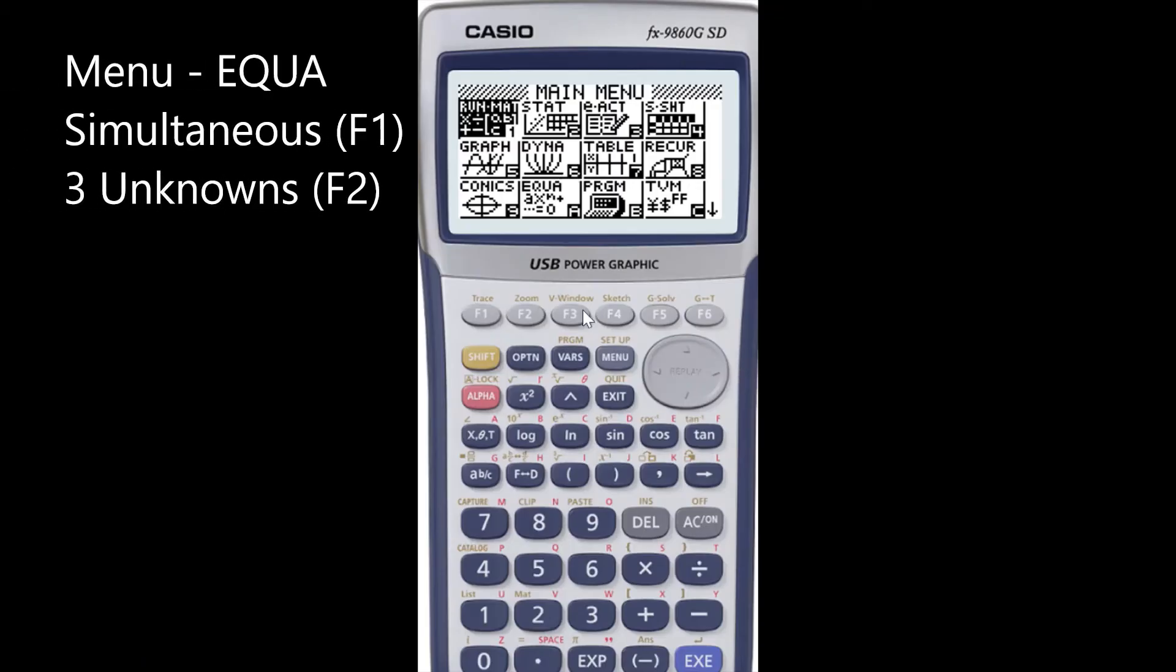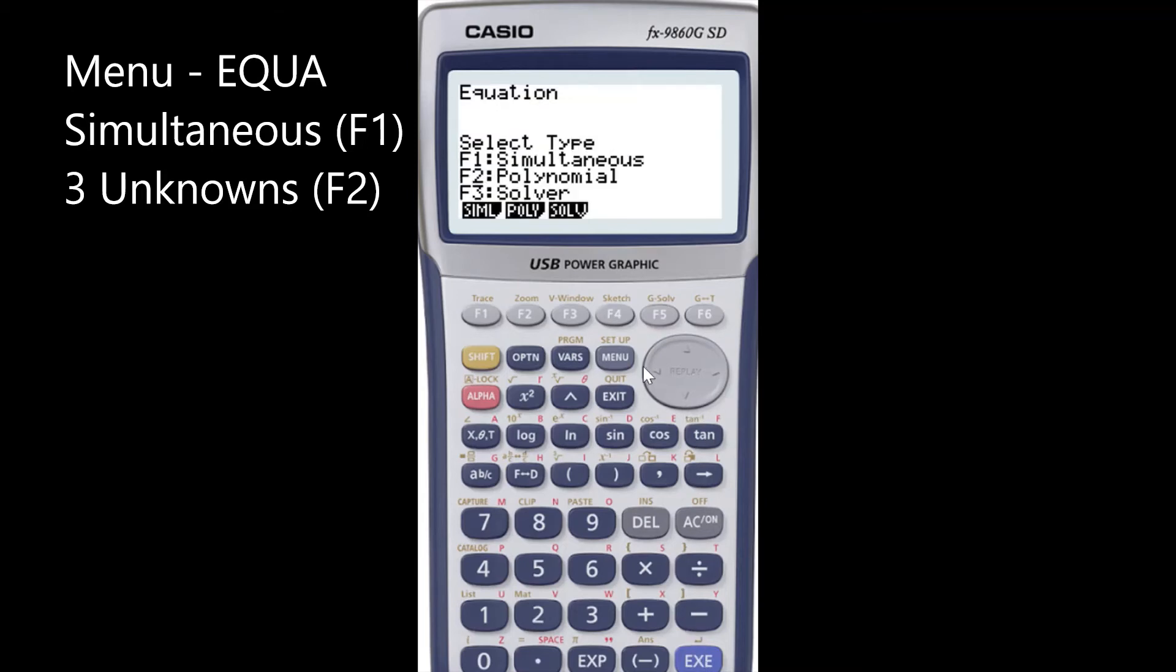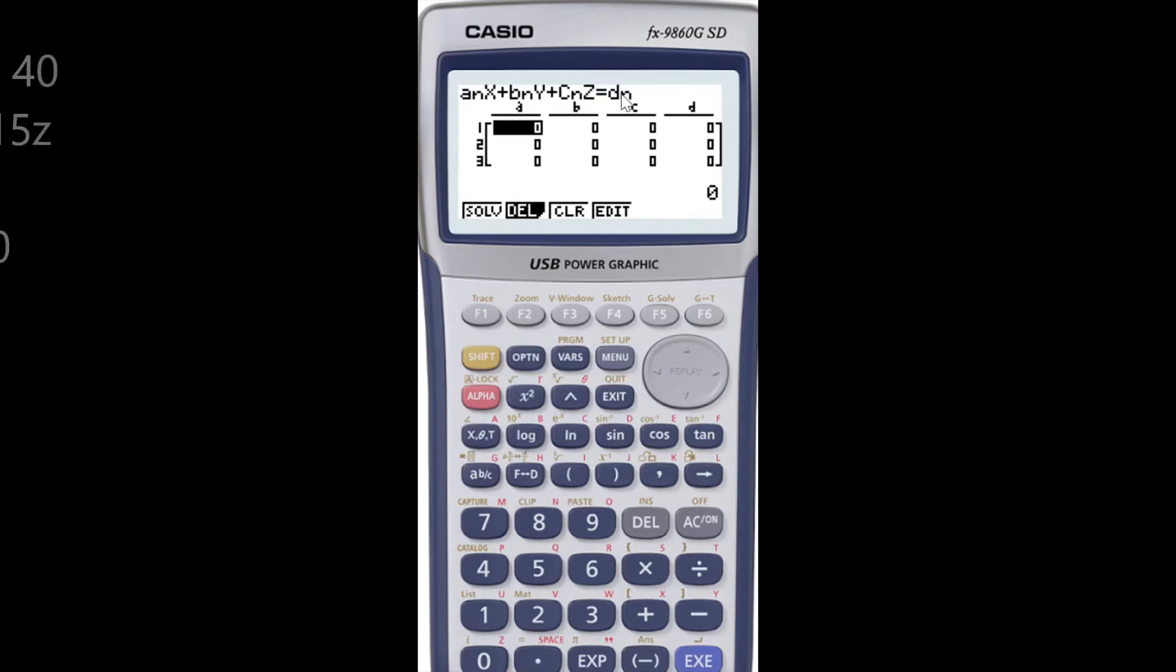On a graphics calculator from the main menu you will need to select equations and then simultaneous, so click F1 and then the number of unknowns in this case is three unknowns so F2. You will see that the general equation is in the form anx + bny + cnz = dn, that's why we need to rearrange our equations in this form where all the variables are on the left hand side and a constant on the right hand side. Then you can enter the matrices.